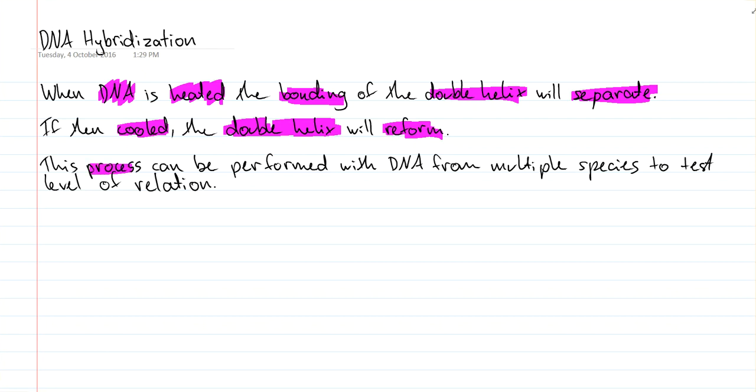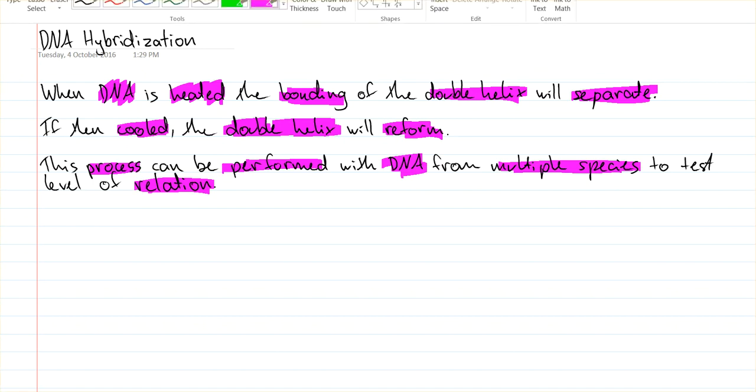We can take this process and perform it using DNA of multiple species to test how related those species are. If we add in DNA from different species and do this DNA hybridization process, we can use this as a tool to test how closely related they may be.